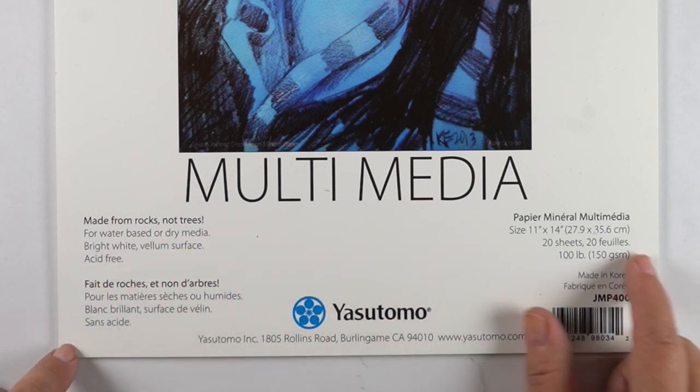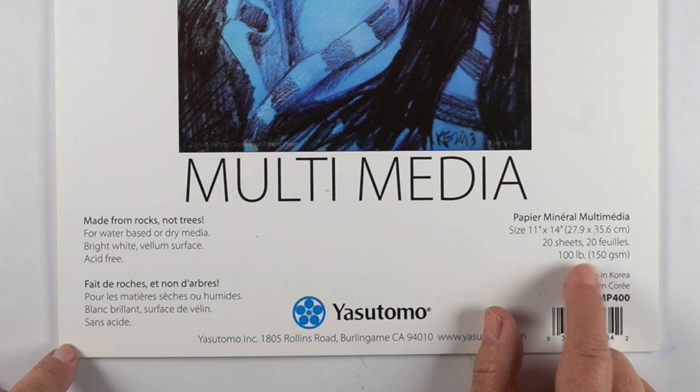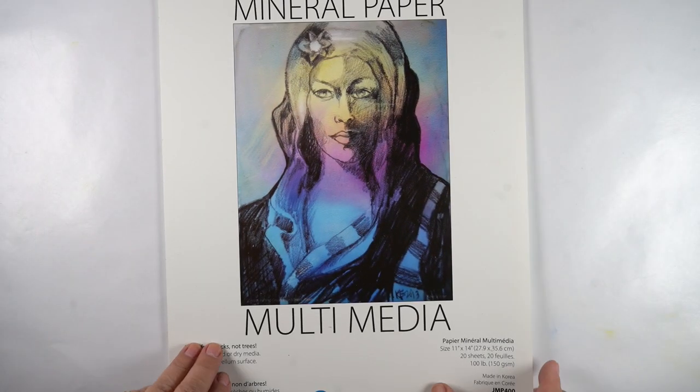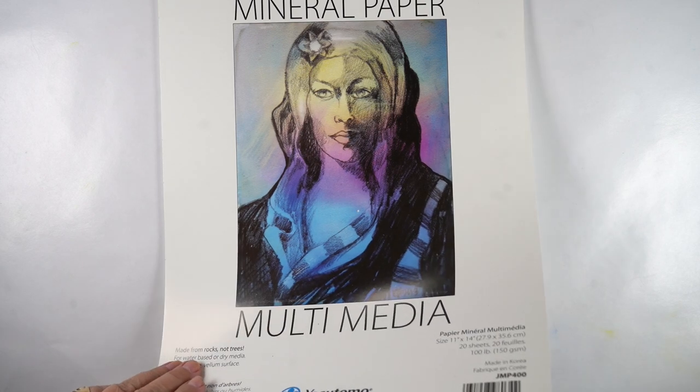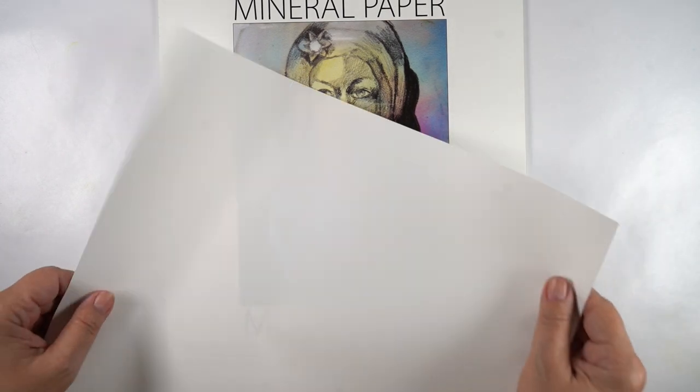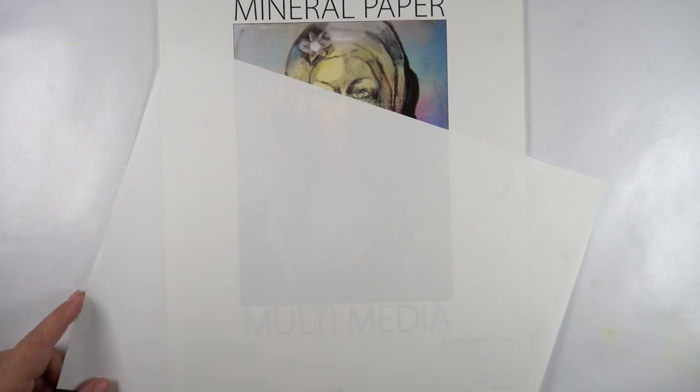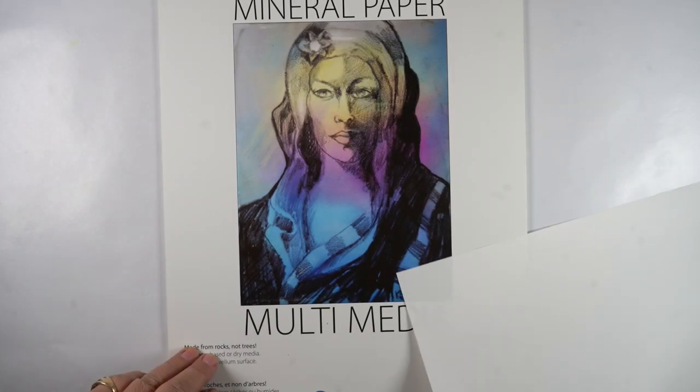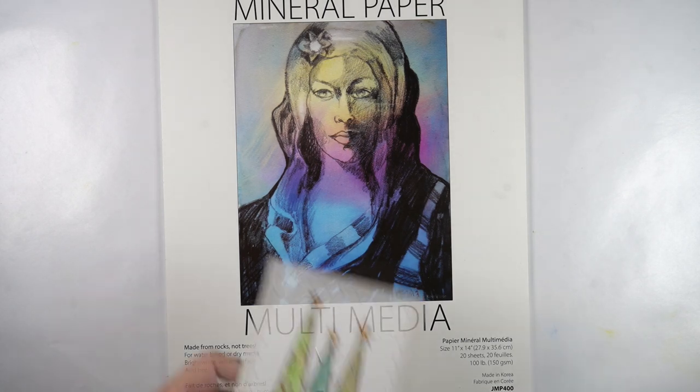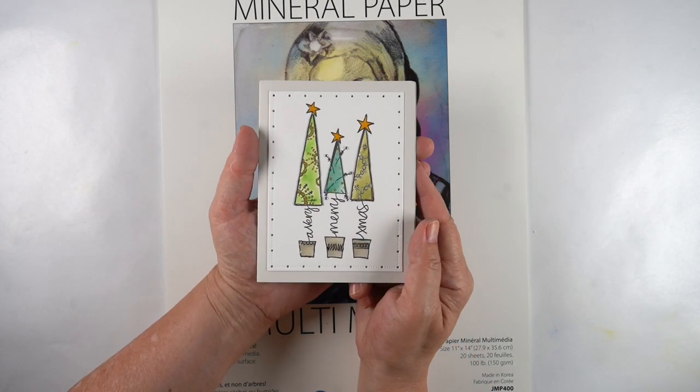It's made of rocks, not trees, so it's not plastic but it's very much like yupo in the surface. However, it is thinner than yupo but it's not like yupo has a translucent one that's more like vellum. This one is just a thin paper.